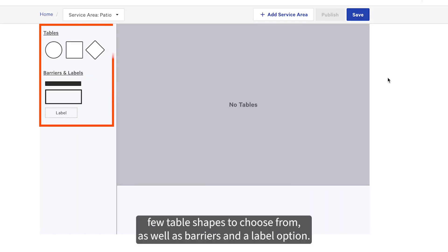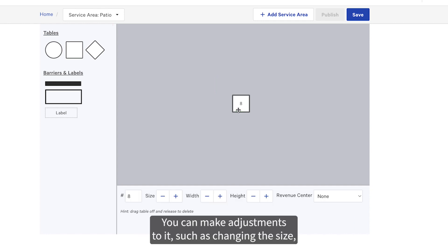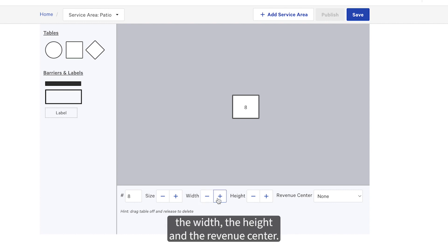ToastWeb gives you a few table shapes to choose from, as well as barriers and a label option. When you add any of these elements to your layout, you can make adjustments to it such as changing the size, the width, the height, and the revenue center.